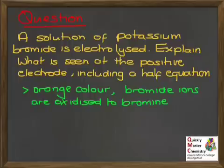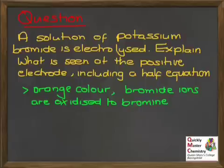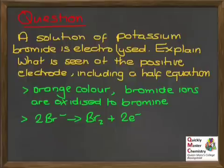You should expect to see an orange colour — or possibly yellow for a more dilute solution — because the bromide ions in the potassium bromide solution are being oxidised to bromine at the positive electrode. The half equation shows 2Br⁻ losing 2 electrons to form Br₂.